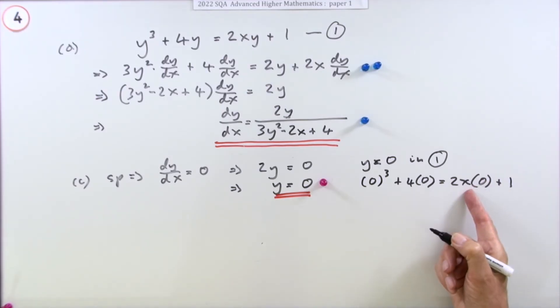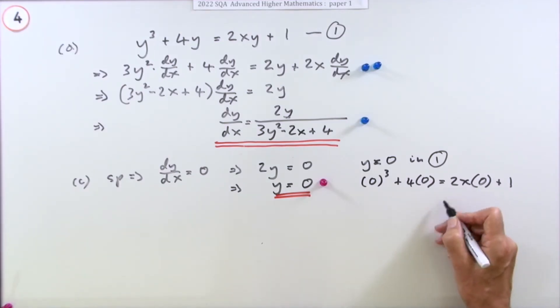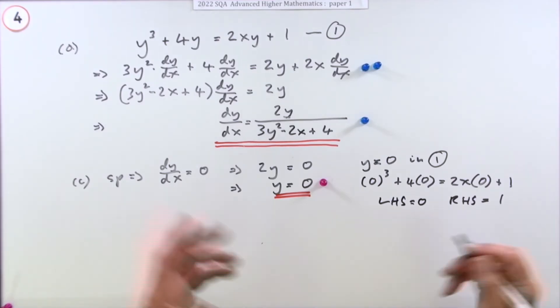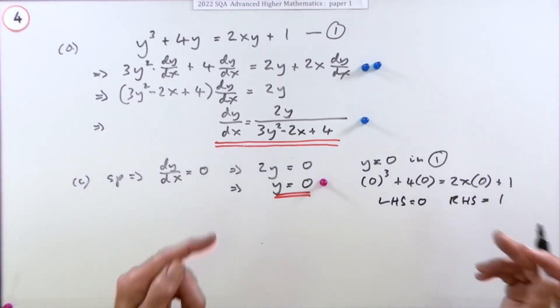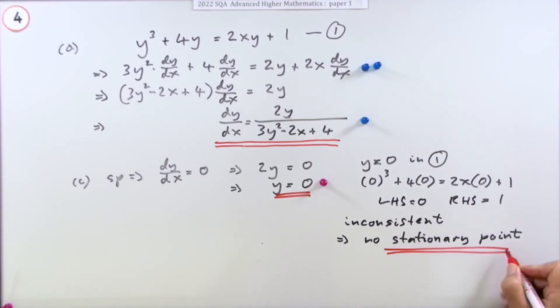That means you can't find x because it's got knocked out. This equation's turned into nonsense because the left side is zero and the right side is one. If the left hand side is zero and the right hand side is one, you've got an inconsistent equation, which means you can't find x, which indicates there's no stationary point. Inconsistent, so no stationary point—that's the second mark.